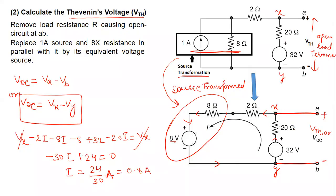If we have to find out VOC, which is VX minus VY, in this case, VX minus VY equals, if we apply here, it is 32 minus 20I. So it is 32 minus 20 into 0.8, which equals 16V. It is equal to 16V here. This is another parameter we have obtained.